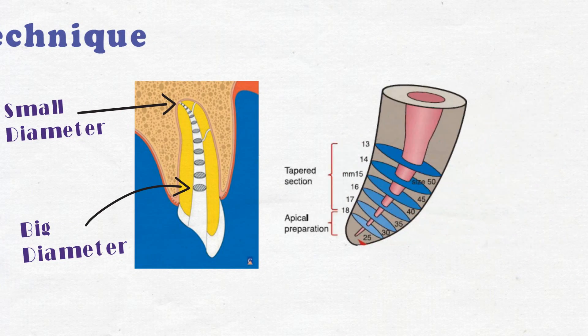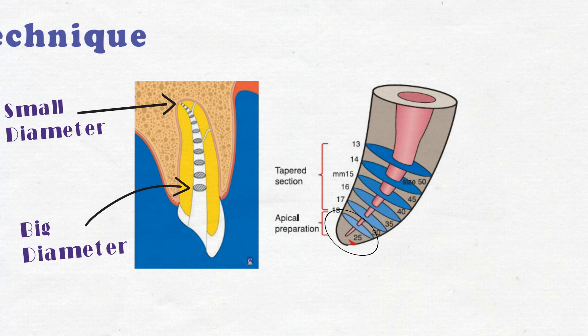Basically this technique involves the canal preparation into two phases. Phase one involves the preparation of the apical constriction and phase two involves the preparation of the remaining canal.